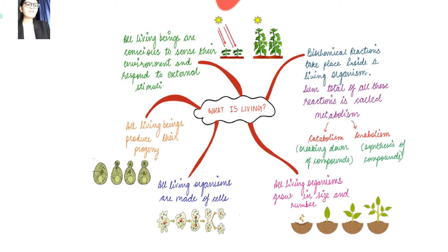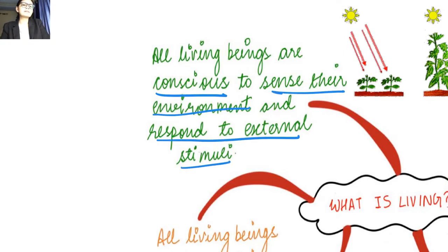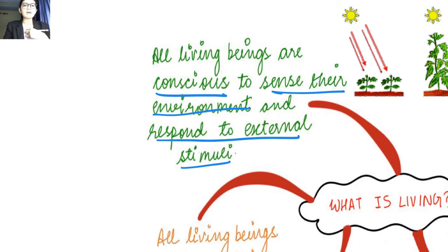This is a flowchart — a basic overview of your entire video. There are five main characteristics that separate living creatures from non-living things. First: consciousness. All living beings are conscious — they sense their environment and respond to external stimuli. Consciousness is basically the ability to interact with whatever is around you; you take in information and adjust yourself accordingly.